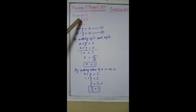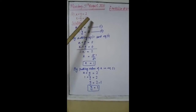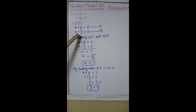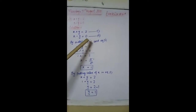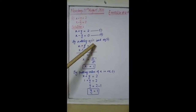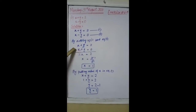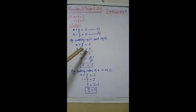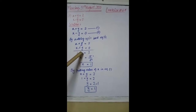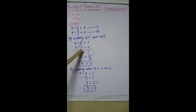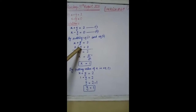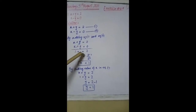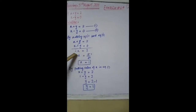Part 2: x + y = 2, and x - y = 0. x + y = 2 is our first equation, and x - y = 0 is our second equation. By adding equation 1 and equation 2: the y and -y cancel each other, giving x + x = 2, so 2x = 2.